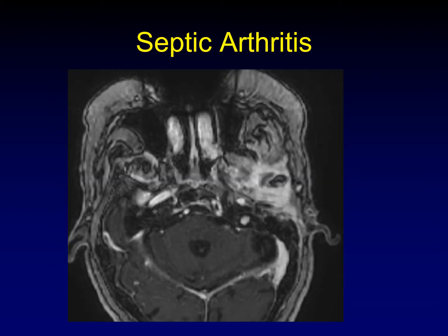Here's another example on MRI where you can see the extent of inflammation surrounding the entire joint, extending into the surrounding soft tissues, as well as what's left of the synovial space also abnormally enhancing, with not much condylar head left from erosions.